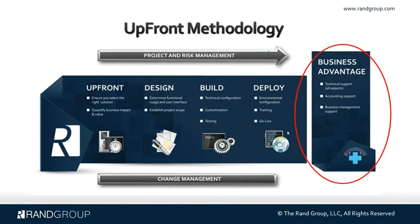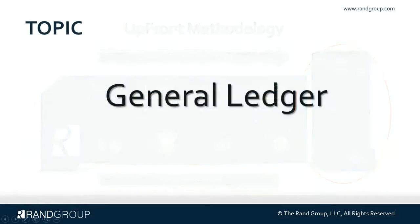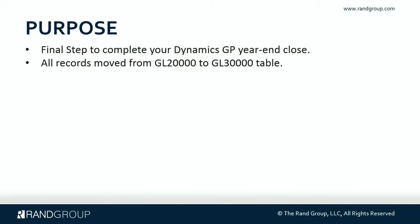Our Business Advantage team offers technical support, accounting support, and business management support. The final module to close in your year-end closing process will be the general ledger. Closing this module completes your Dynamics GP year-end close and moves records from the GL 20,000 (current year) to the GL 30,000 (historical year).